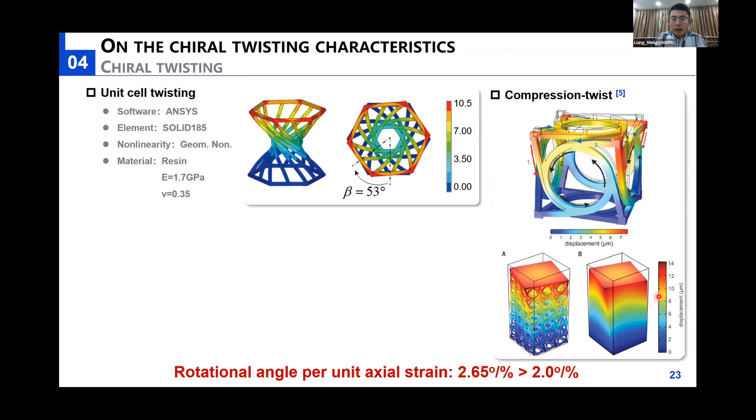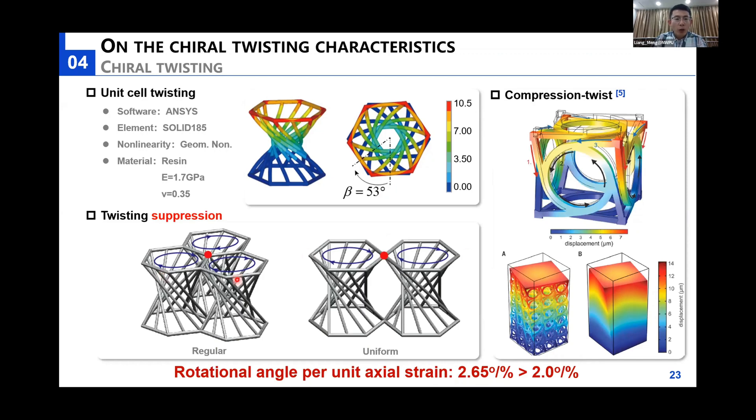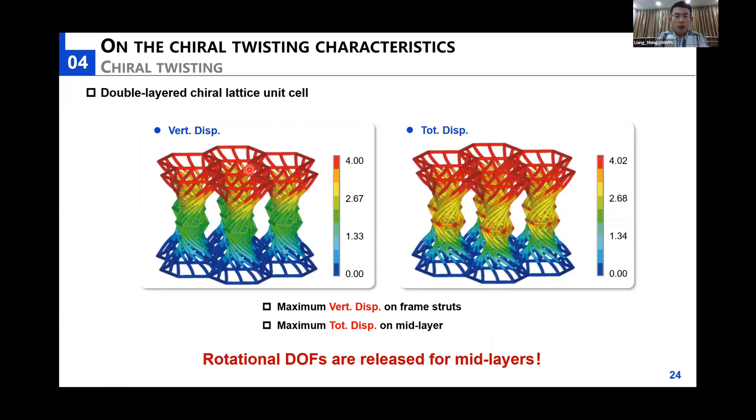Despite the significance of this chiral twisting effect at the cellular level, this twisting effect can be totally suppressed at a structural level once these unit cells are tessellated, either by the regular or the uniform tiling strategies due to this kind of self-locking after tessellation. To benefit from this twisting effect after tessellation, we propose to stack two chiral unit cells while designating a smaller mid-layer frame here compared to the top and bottom ones. The displacement contour reveals that the maximum displacement is over 4 mm. In this sense, the rotational degree of freedom is released for the mid-layers.